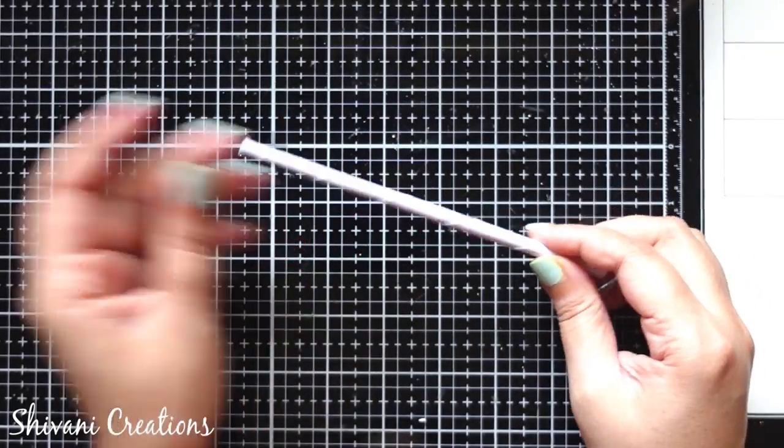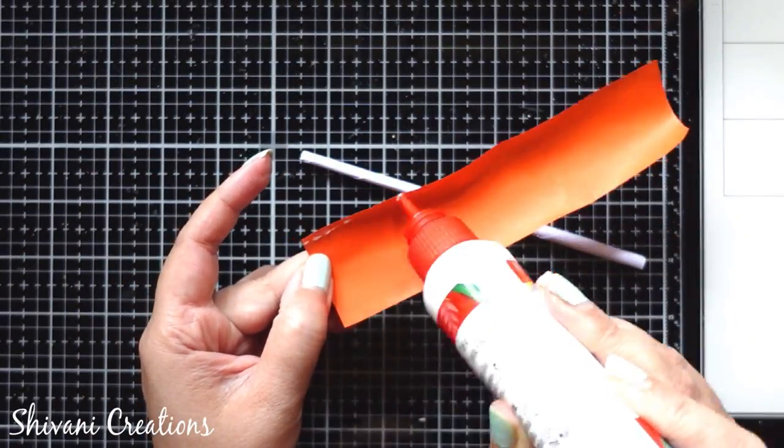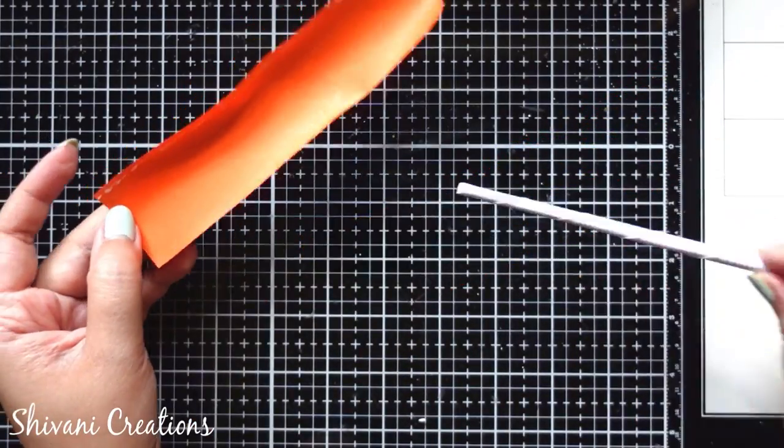Then I'm going to wrap this using orange color craft paper which is also having 16 centimeter width.